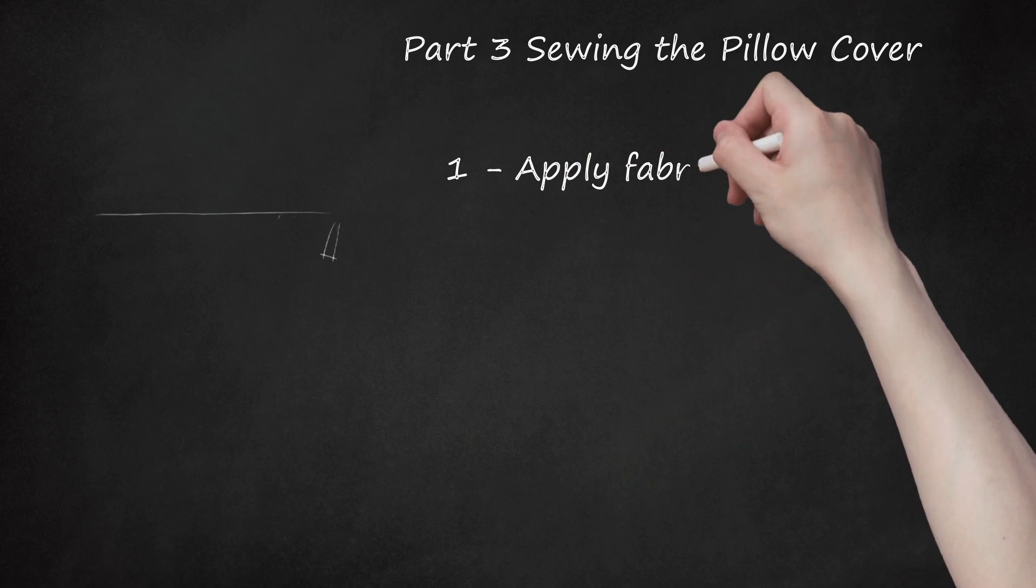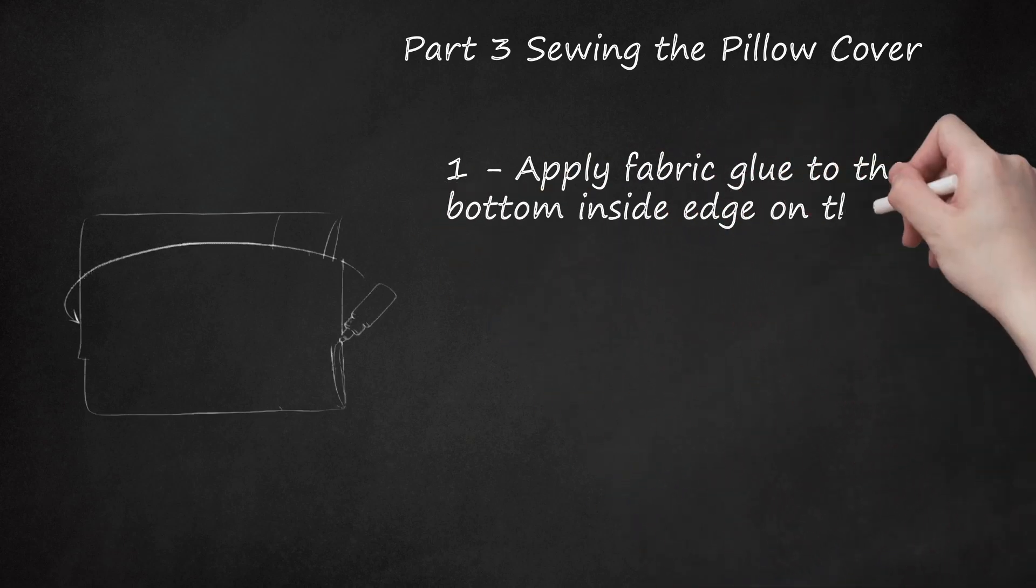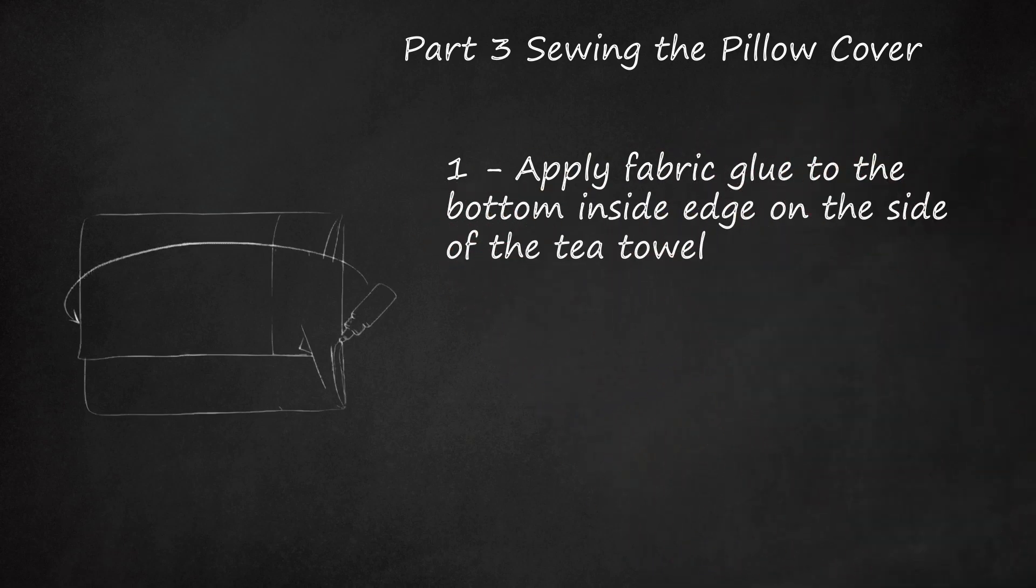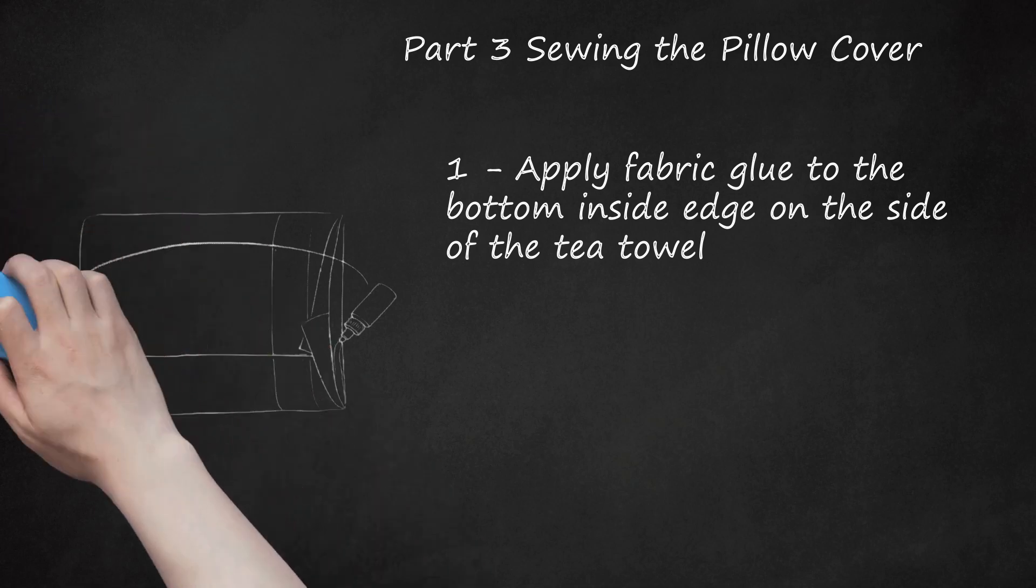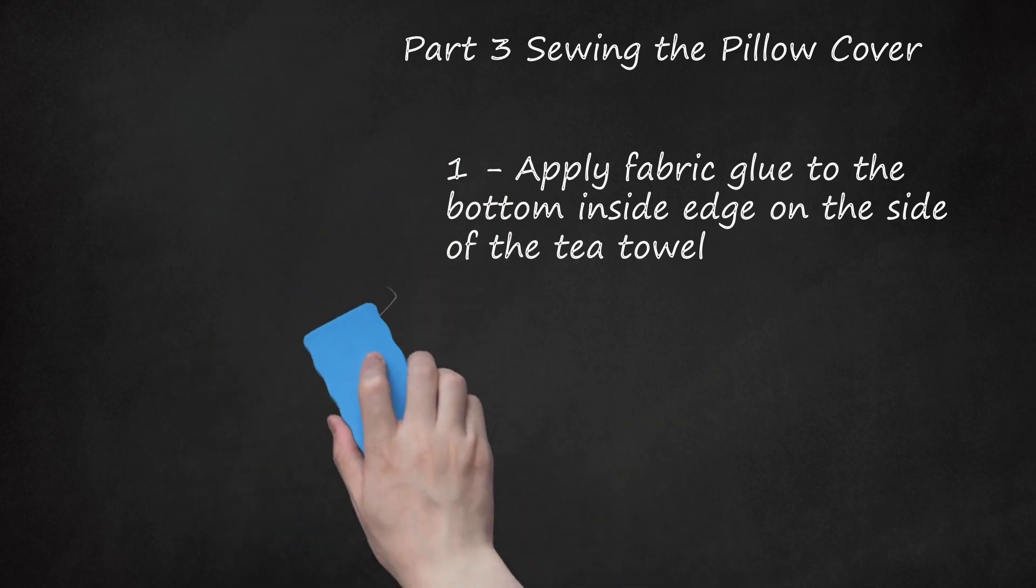Part 3: Sewing the Pillow Cover. Step 1: Apply fabric glue to the bottom inside edge on the side of the tea towel. Press the top and side edge against it. Ensure the seams are matched all the way down the side as you press them together. This is the no-sew option. Repeat on the opposite side. Leave your glue to set according to package directions.